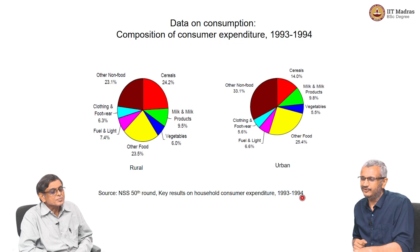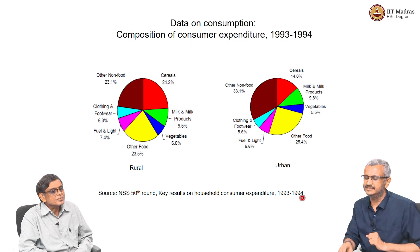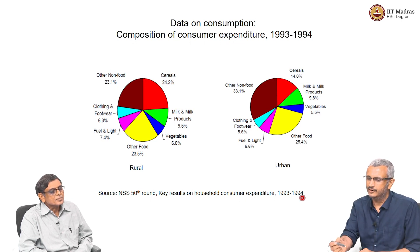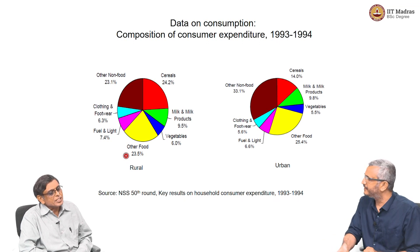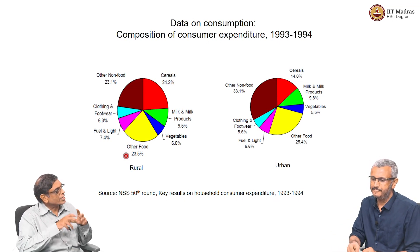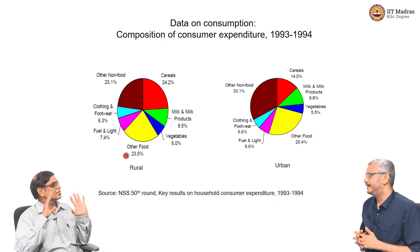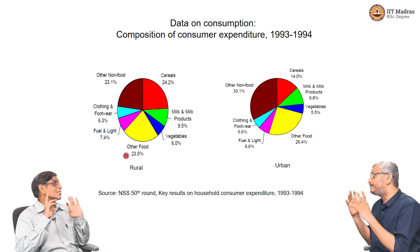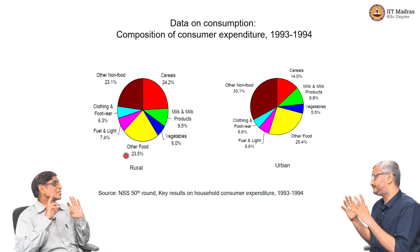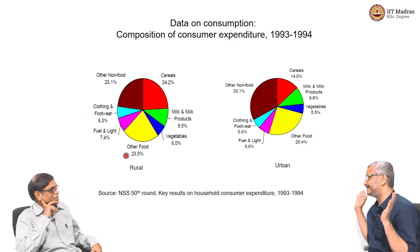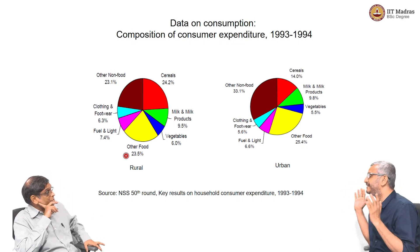Here we have typical consumption data for rural as well as urban. When we do NSS, we cover the entire population of India — well, samples, but the coverage is representing the entire population. It is samples representing the entire population.